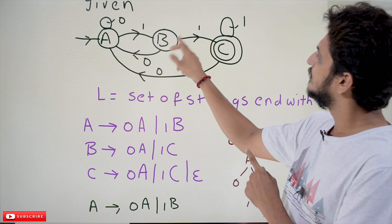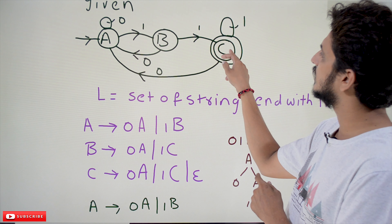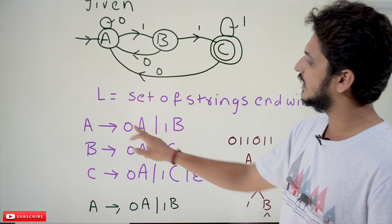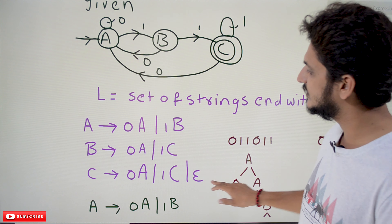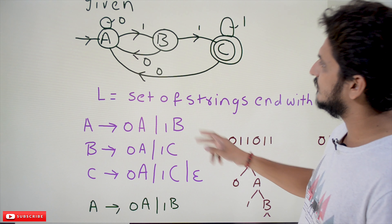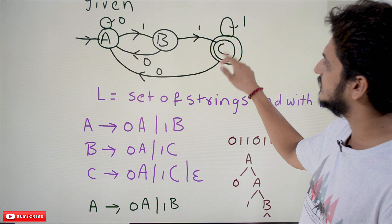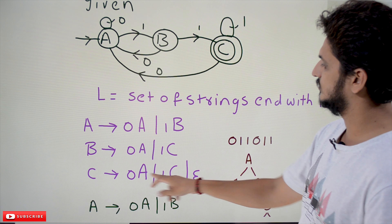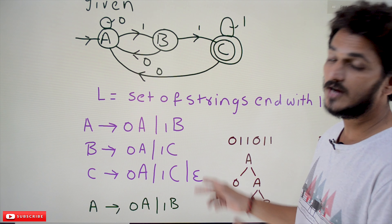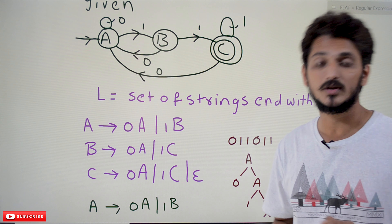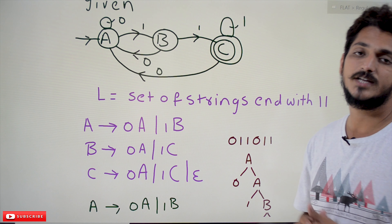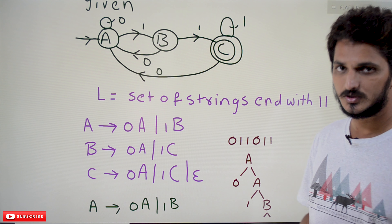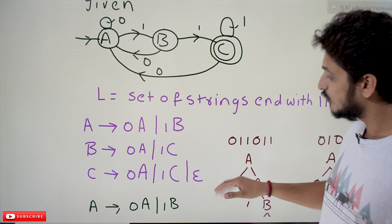Write the production for B: on seeing input symbol one we move to C, on seeing zero we move to A. So B → 1C and B → 0A. Similarly write the production for C: C → 0A and C → 1C. For the final state, add the epsilon production.